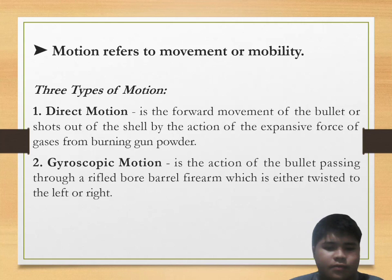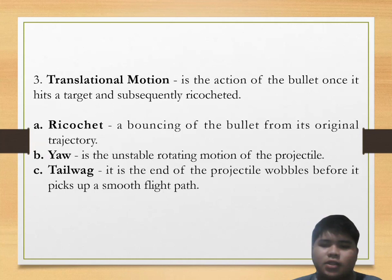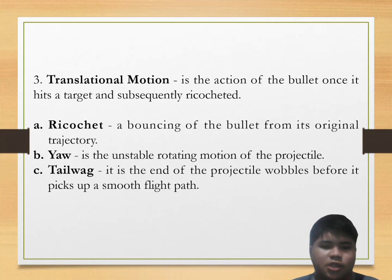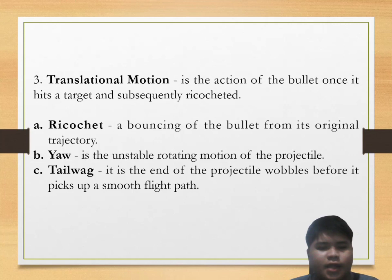Third is translational motion. It is the action of the bullet once it hits a target and subsequently ricochets. Ricochet is a bouncing of a bullet from its original trajectory; it usually happens when a bullet hits a hard object such as metal, concrete, or a bone of the human body. Yaw is the unstable rotation of the projectile, and tailwag is the movement of the end of the projectile before it picks up a smooth flight path.